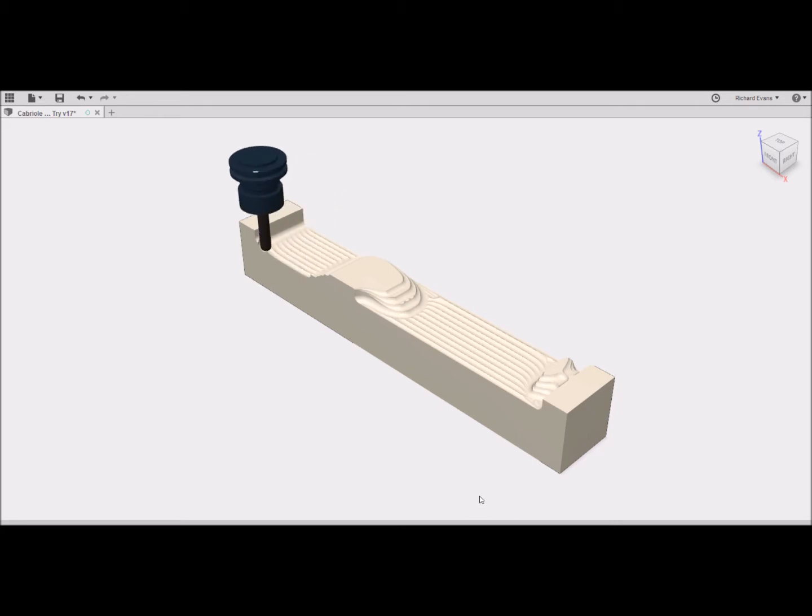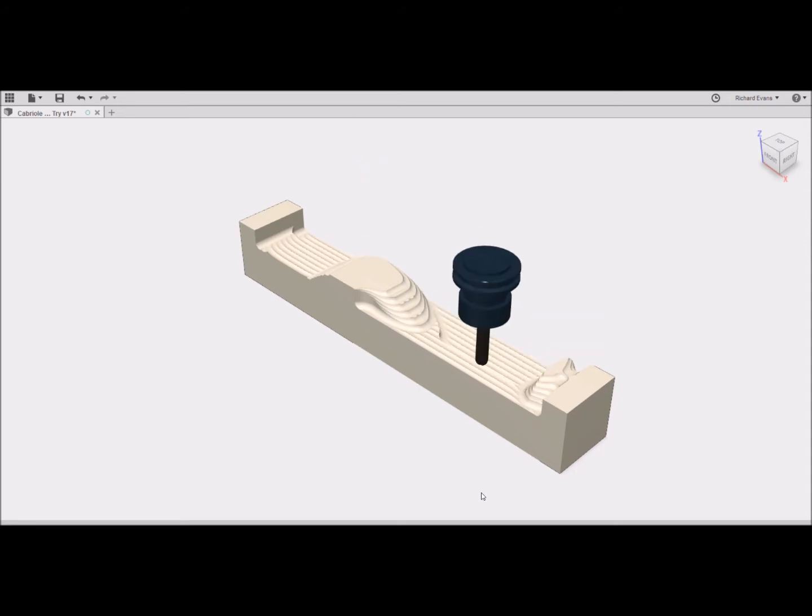The first two paths are two steps. The first is an adaptive 3D clearing to within two-tenths of an inch of the final surface. The second stage is a parallel finishing cut to final depth with a one-tenth of an inch step-over. The last two paths, being the stock side and the stock front, involve parallel finishing cuts only.